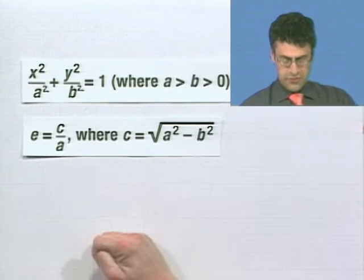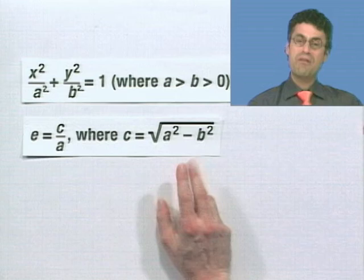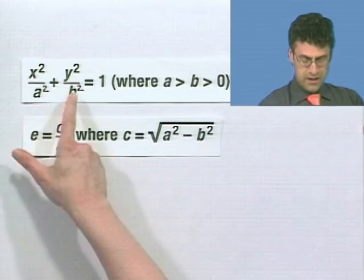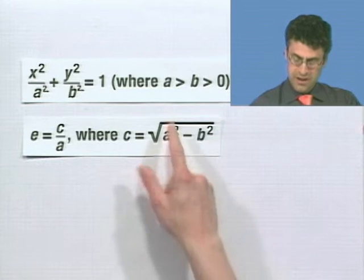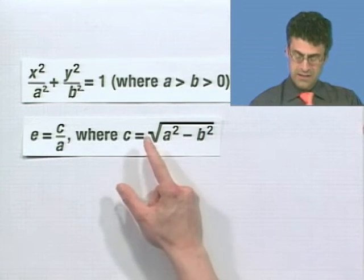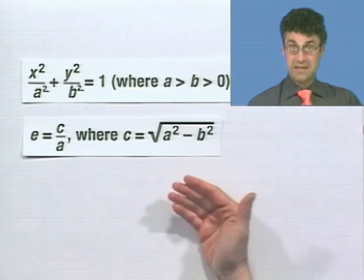But c is more interesting. c is the square root of the differences of the squares, namely the denominators. That's why it's important that a is bigger than b, because when I subtract these, I want the square root to actually exist, to be a real number.